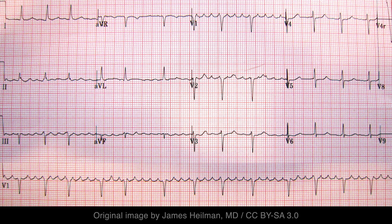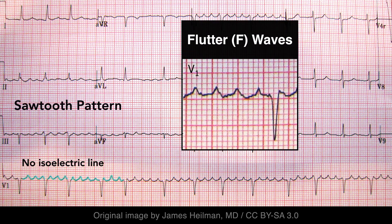Atrial flutter is a macro re-entrant dysrhythmia characterized by rapid flutter waves with a sawtooth appearance. The ectopic atrial depolarizations are called flutter waves — they are not P waves. These flutter waves are usually best visualized in the inferior leads, where they have a V shape. In this case, the flutter waves are best visualized in V1, where they are positive deflections.